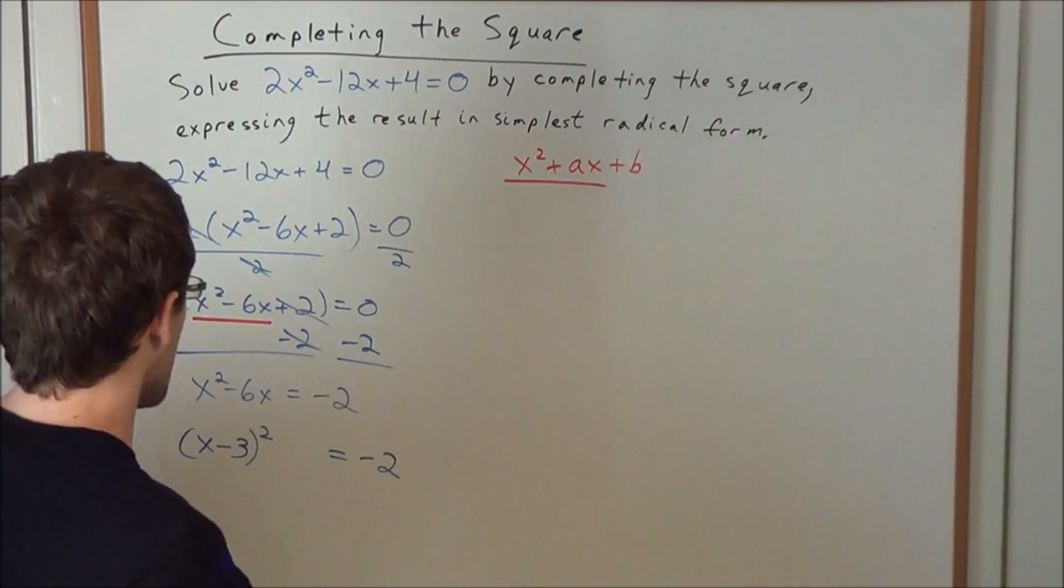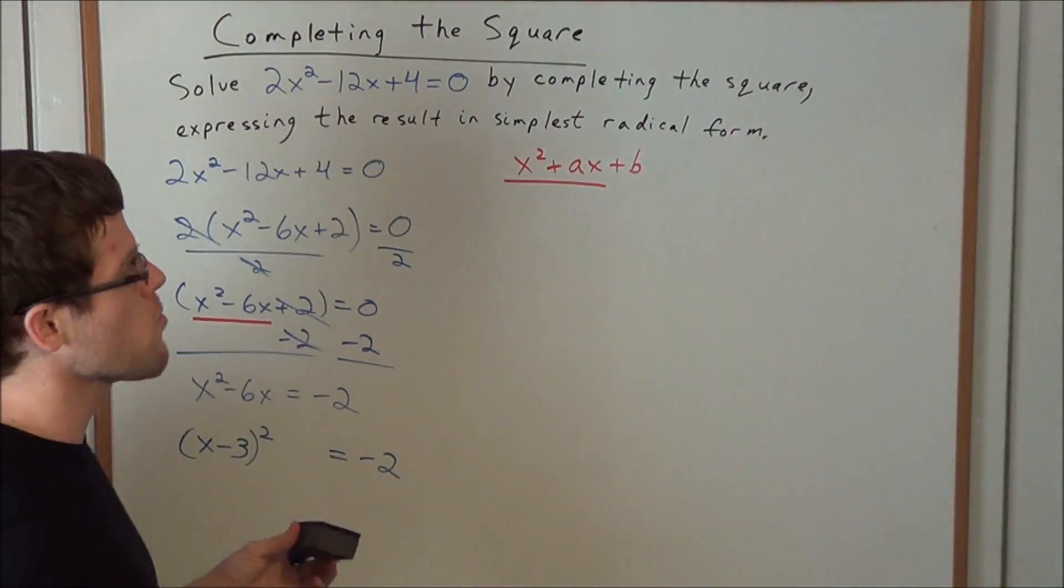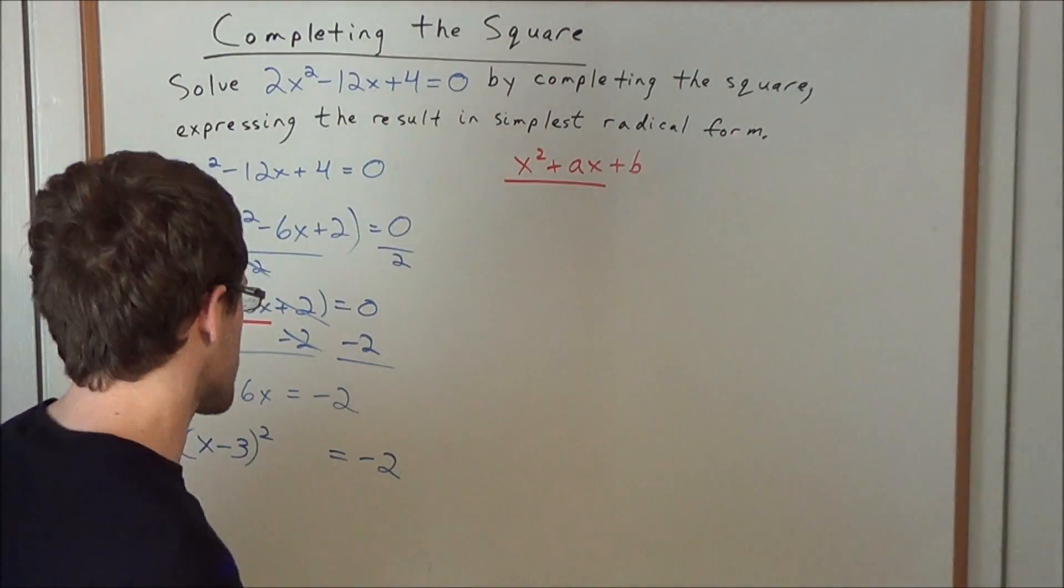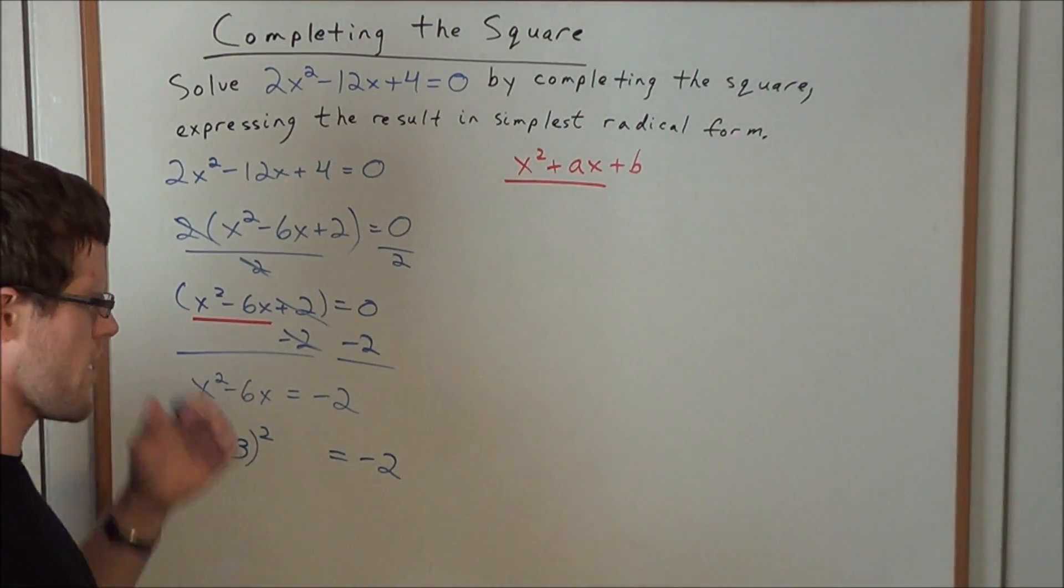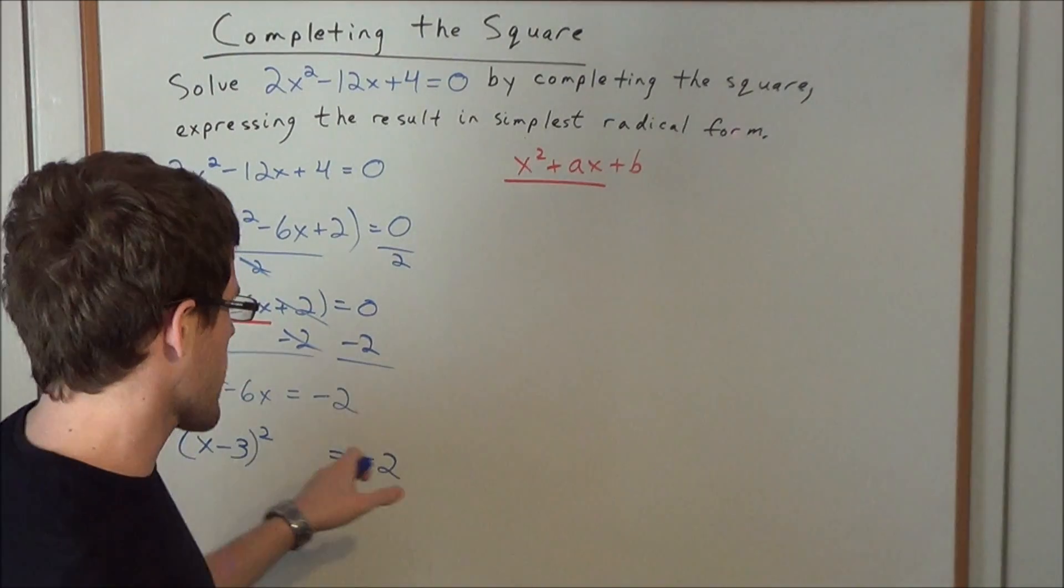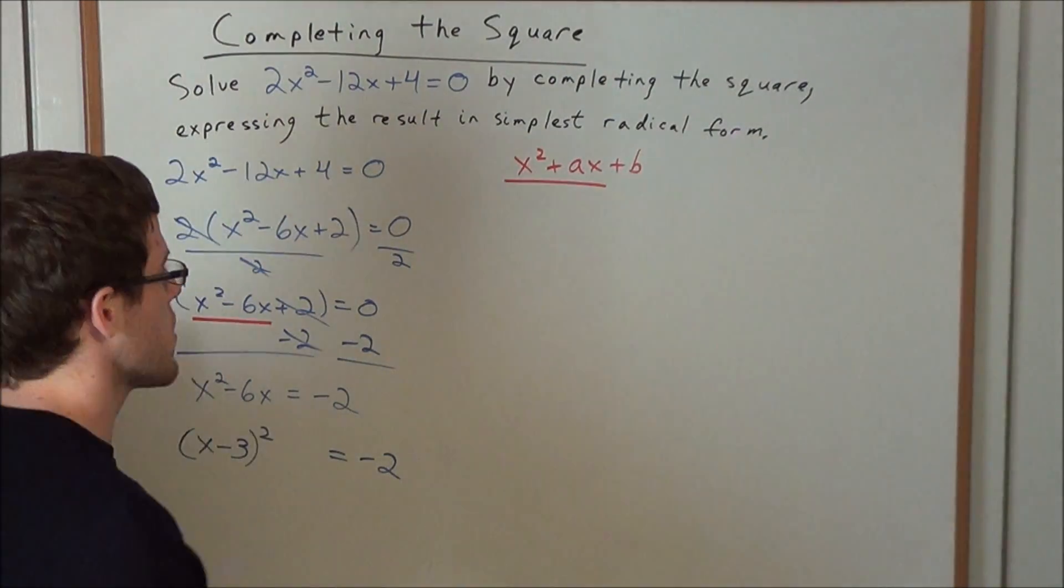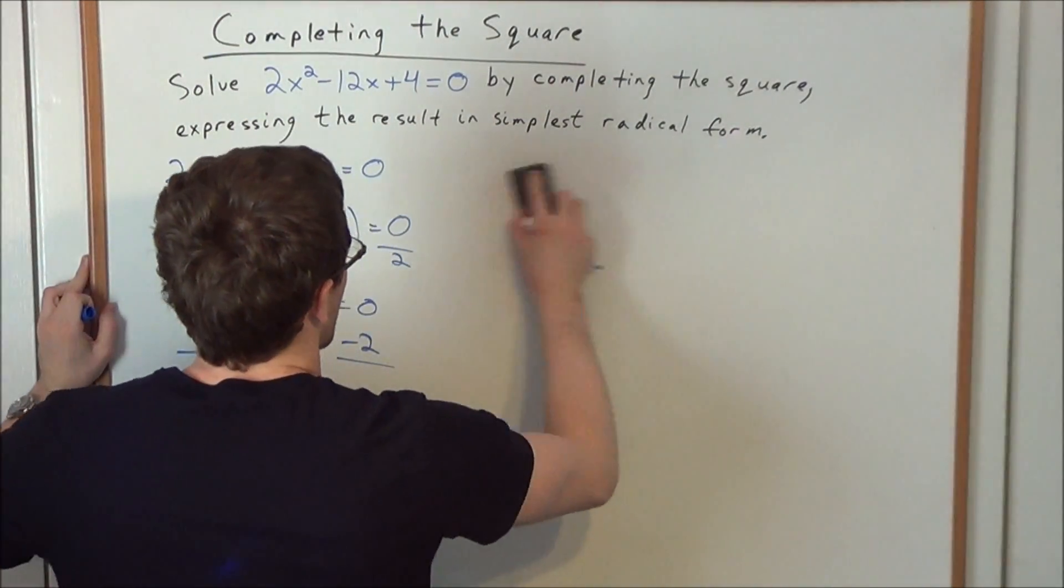So now, some students, when they're more practiced with this, they can do this really fast in their head. They can look at this and say, all right, well, x² - 6x and the extra piece is going to be a +9, so subtract 9. But I'm not going to show it only that way. I want to show it in a way that makes it easier for everyone to do it.